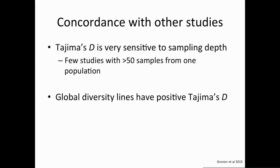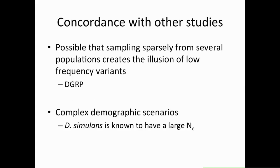While other studies have found plenty of evidence for soft selective sweeps, the elevated Tajima's D is a somewhat unique result — possibly because Tajima's D is very sensitive to sampling depth, and simulations suggest you need more than 50 samples from one population. The global diversity lines by Grenier et al. 2015 did show positive Tajima's D, though not as high as ours. It's also possible this relates to sampling sparsely from several populations, which could create an illusion of low-frequency variants. The DGRP, collected at a farmer's market, likely represents multiple populations, and complex demographic scenarios cannot be fully excluded.